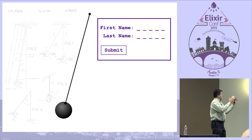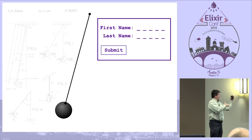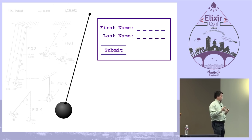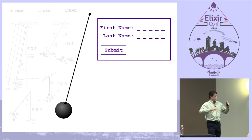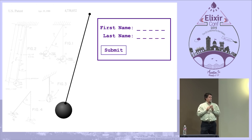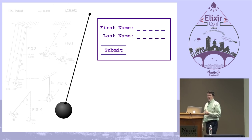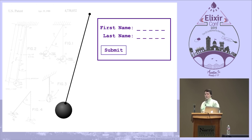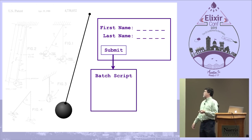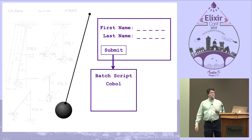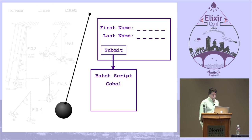Eventually somebody got the idea to put a terminal on the computer and present a form. You would fill out the form, submit it, and run a batch program. So now we're loading the pendulum for the first time — you have this form tied to a batch script, and most of those turned out to be COBOL programs.